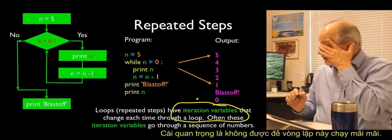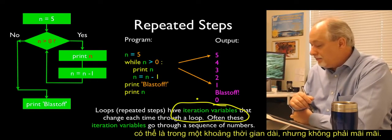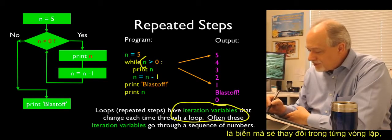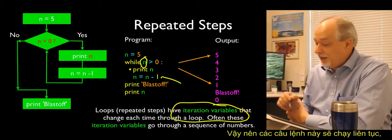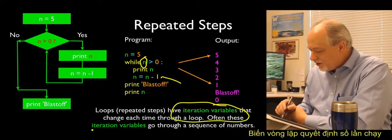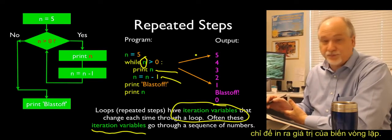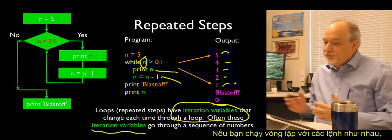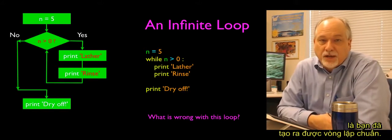Iteration variables. The key to loops is they can't run forever — we want them to run as long as we need and then stop. There's got to be a way to get out of them, otherwise we call them infinite loops. The iteration variable is generally some variable that changes each time through the loop — here we're subtracting 1 from it. Whatever n is, it could be a large number, but eventually it gets to 0. The iteration variable controls how many times the loop runs and allows us to do something different inside the loop each time.